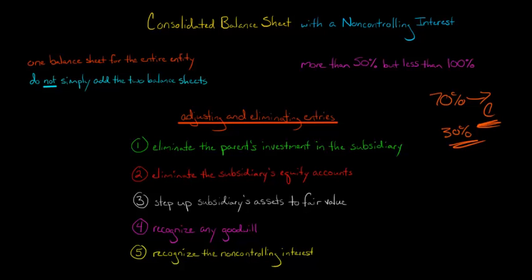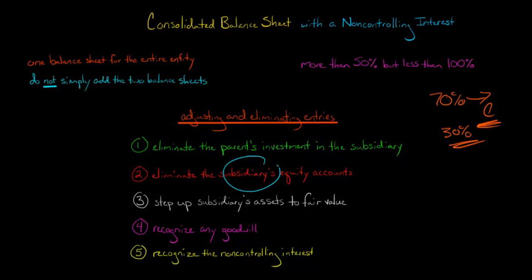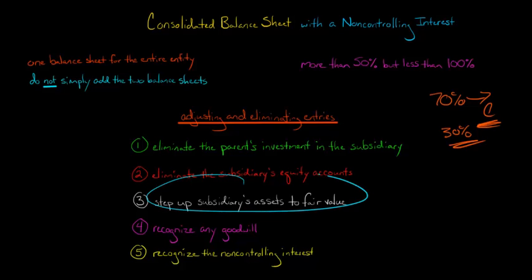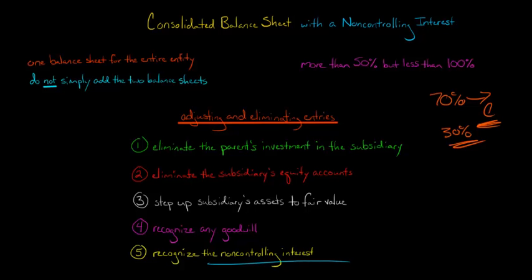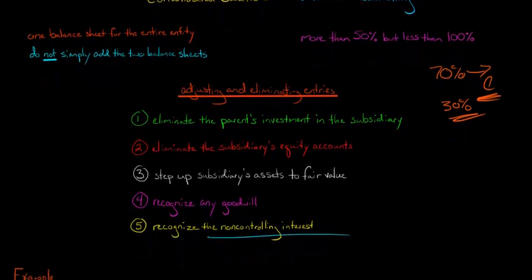When you make the investment — when you purchase this subsidiary — you're going to debit Investment in Subsidiary and so forth. So we have to first eliminate the parent's investment in the subsidiary. We're also going to eliminate that subsidiary's stockholders' equity accounts, like common stock and retained earnings. We're going to step up their assets to fair value, and we're still going to recognize goodwill. We still have the same first four steps, but there's a new fifth step where we're going to recognize the stockholders' equity account: non-controlling interest.